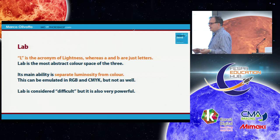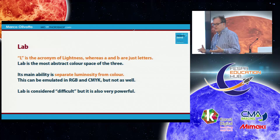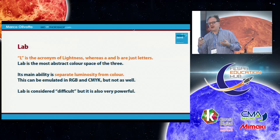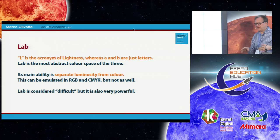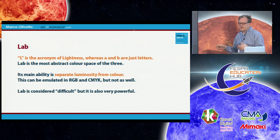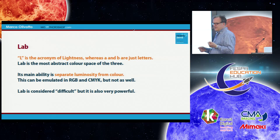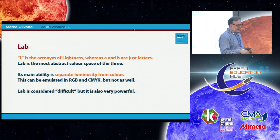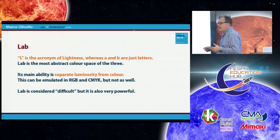Now let's come to LAB. L is the acronym of lightness, which means how light or dark a color is. The A and B mean nothing in particular — they are just letters. LAB is the most abstract color space of the three, with completely different rules from both RGB and CMYK. Its main ability, which is very important, is that LAB by its nature separates luminosity and color completely. This is easy to emulate in RGB and CMYK, but it doesn't work as well as in LAB.